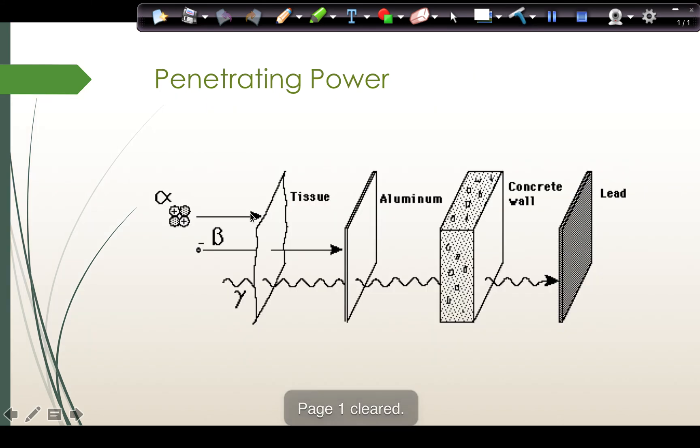When we talk about penetrating power, we're talking about how much can something go through. Alpha has the weakest penetrating power. It can be stopped by tissue, like body tissue. Beta has a stronger penetrating power than alpha. It can be stopped by aluminum, a thin sheet of aluminum. Gamma can go through almost everything. It has the strongest penetrating power. Gamma needs a thick sheet of lead in order to stop it.